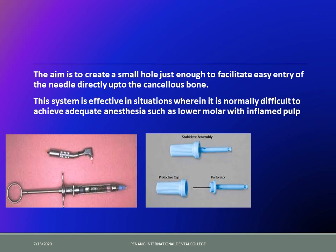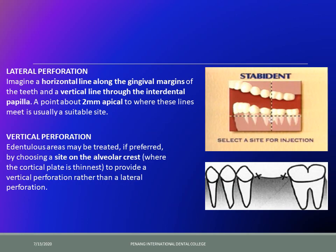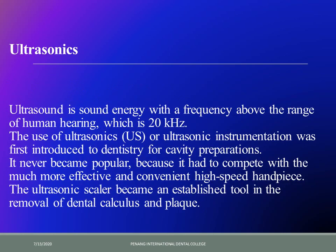The aim is to create a small hole just enough to facilitate easy entry of the needle directly into the cancellous bone. It is more commonly used for lower molars, especially in cases of hot tooth, and can provide quite a lot of relief. To select the site for injection, imagine a horizontal line along the gingival margins of the teeth and a vertical line through the interdental papilla. A point about two mm apical to where these lines meet is the suitable site. As seen in the figure, between the second premolar and first molar, two mm apical to that intersection is where you drill the bone and inject directly into cancellous bone for more favorable results.